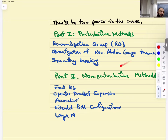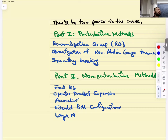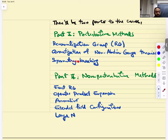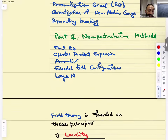For part one, I was planning on following Peskin and Schroeder. We're going to go over the renormalization group — something I mentioned a lot but we didn't discuss systematically — the quantization of non-Abelian gauge theories properly, and then symmetry breaking, including the origin of mass in the universe as one example.